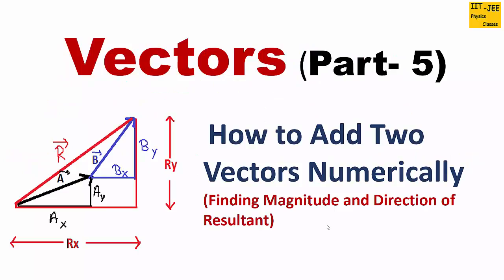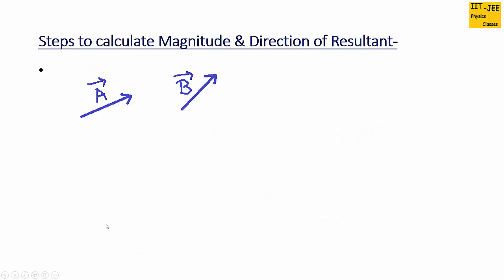Hello friends. In this video we will discuss how to calculate the magnitude and direction of the resultant of addition of two vectors. Please make sure you watched vectors part 1 to part 4, then go ahead with part 5. Suppose we have two vectors a and b and we have to add them and find the resultant r. For that we will use the head to tail method to draw it — we have already discussed the head to tail method in part 2.